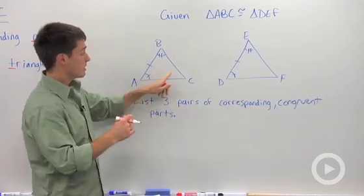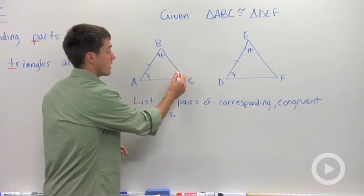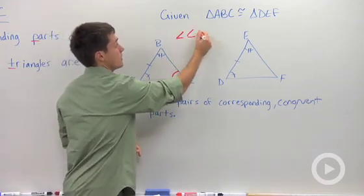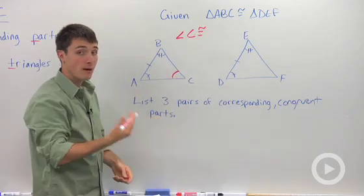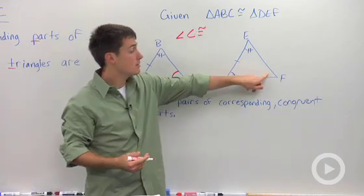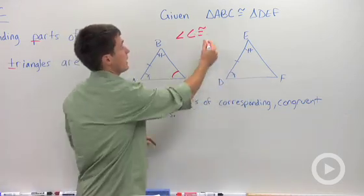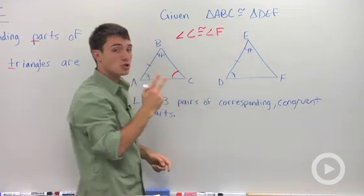So let's pick out angle C. If I look at angle C, the congruent corresponding part must be angle F. And how did I know that? Well, there's two ways.